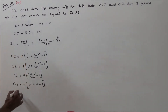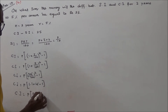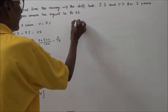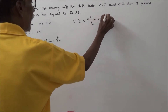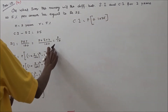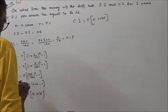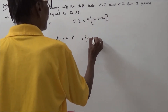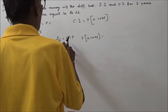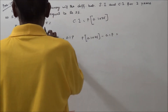So the compound interest equals P into 0.1025. The simple interest is 0.1 into P. Now, compound interest minus simple interest: P into 0.1025 minus 0.1 into P equals 25.